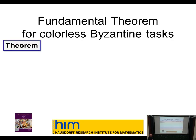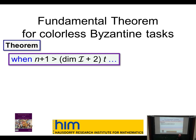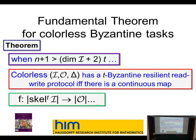I'm going to give you the fundamental theorem for Byzantine tasks, which looks slightly mundane — then I'll explain why it's actually surprising that something so mundane comes out of such a wild model of computation. It says: when n+1 is the number of processes, and n+1 is bigger than 2 plus the dimension of the input complex multiplied by t (where t is the number of Byzantine processes), then the condition is basically the same.